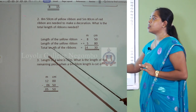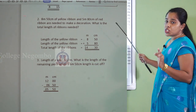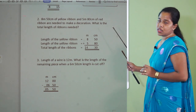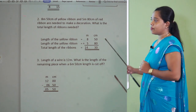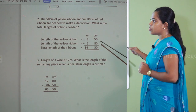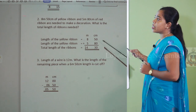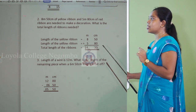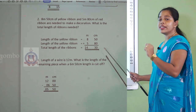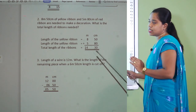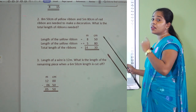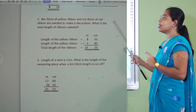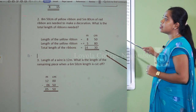As the third statement write the total length of the ribbons. You must add those two numbers. Here 50 plus 80: 0 plus 0 is 0, and 8 plus 5 is 13, so 50 plus 80 equals 130 centimeters. That means 1 meter and 30 centimeters. Write 30 on the centimeter side and carry 1 meter to the meter side. 8 plus 5 is 13, plus that 1 is 14. So the total length is 14 meters and 30 centimeters.